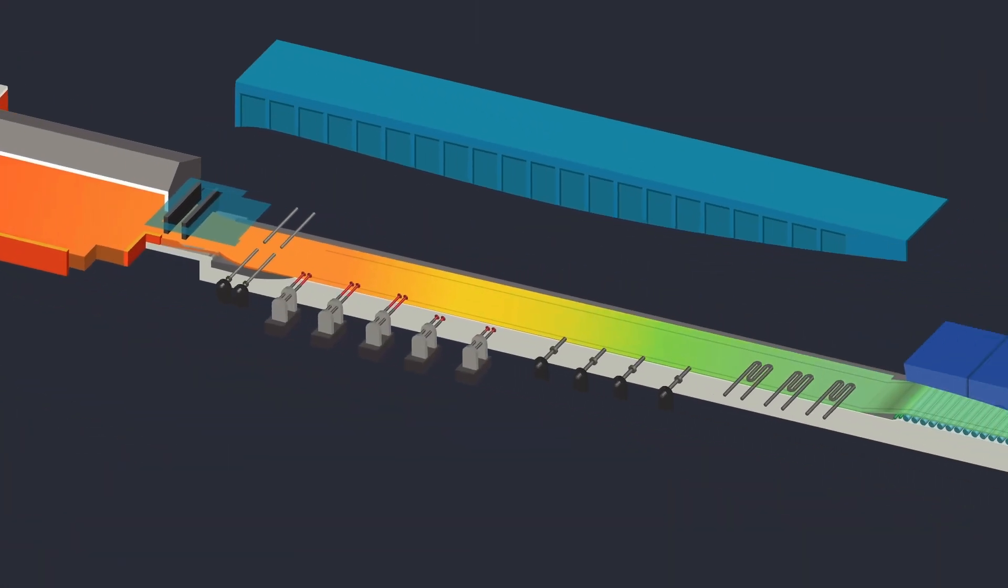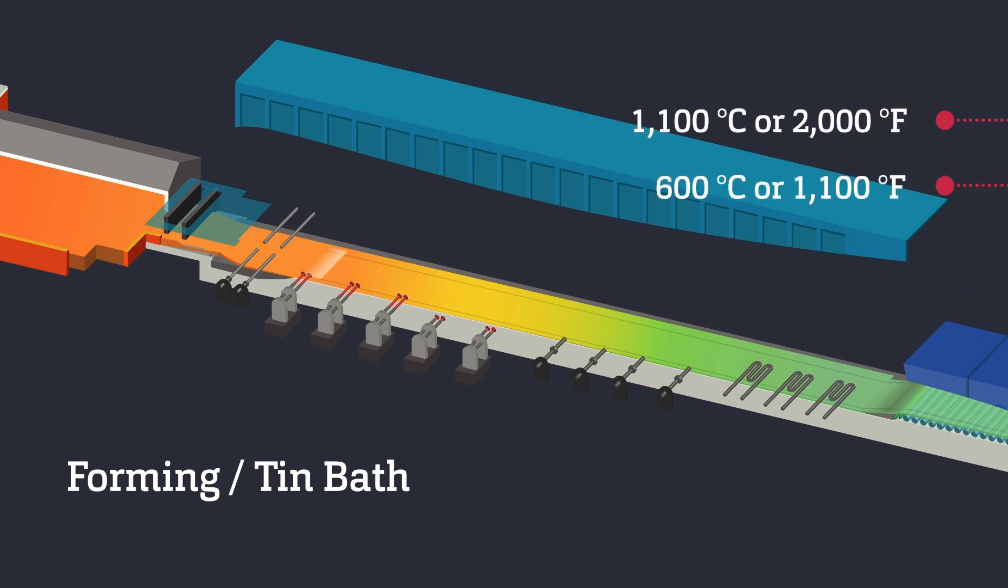Forming takes place within the tin bath. The glass ribbon enters the bath as a liquid at approximately 1100 degrees Celsius or 2000 degrees Fahrenheit and eventually exits in a nearly solid state at approximately 600 degrees Celsius or 1100 degrees Fahrenheit.